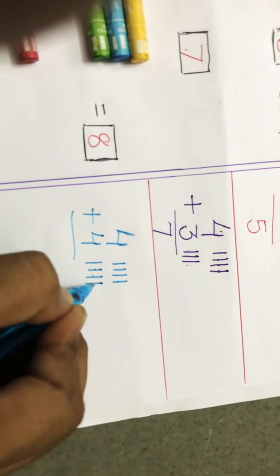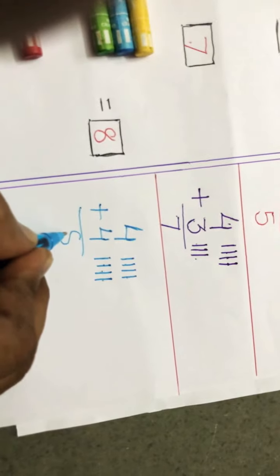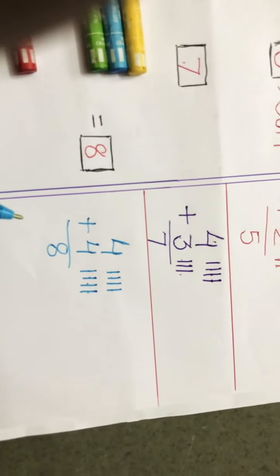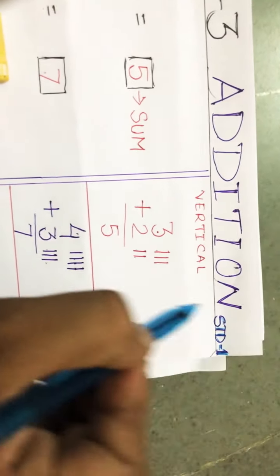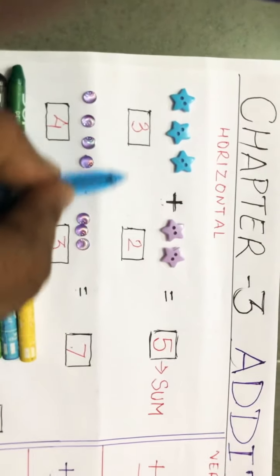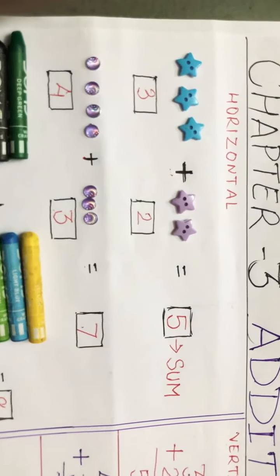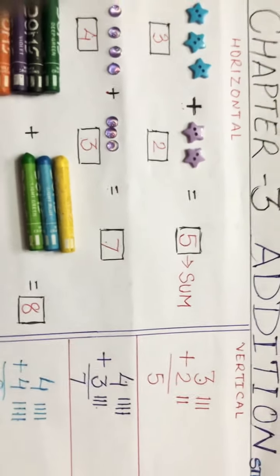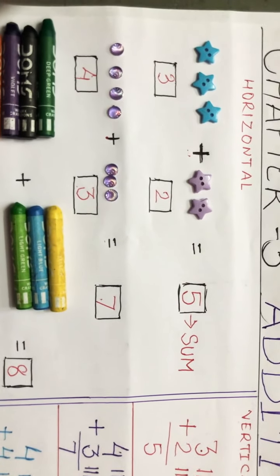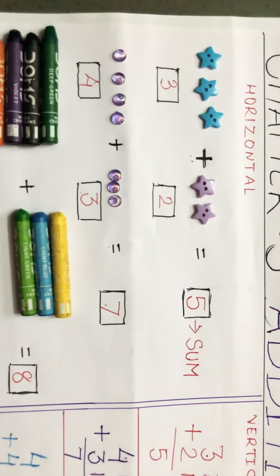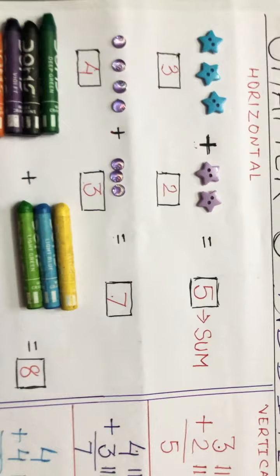Now count together: one, two, three, four, five, six, seven, eight. Answer will be eight, or sum will be eight. So this is called vertical, which means standing addition, and this is called horizontal, which means sleeping addition. On the basis of this, we will do the exercise which is given in the workbook. Bye, take care.